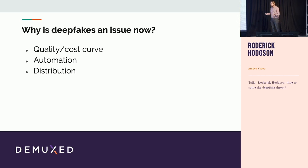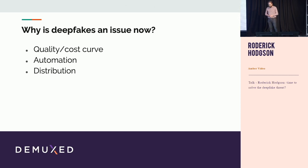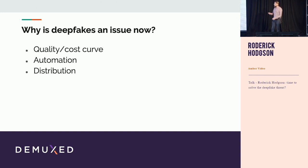I downloaded some free open source software - the latest version of Facebook's open source software. I used footage of Keanu Reeves I found online, and put it all on a cloud computing instance that I was able to run for free because I had some free credits. The total cost for me was zero dollars and about 30 minutes of my time. Obviously the instance was running for about 24 hours, but that was happening behind the scenes.